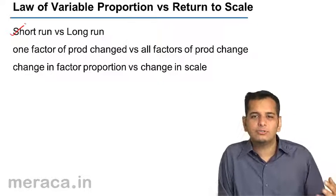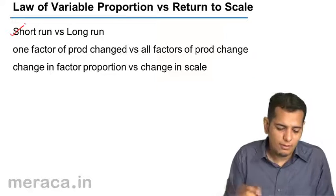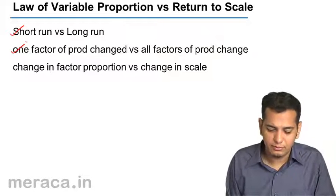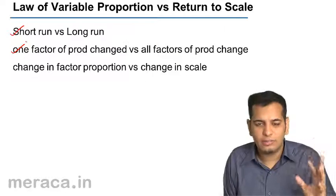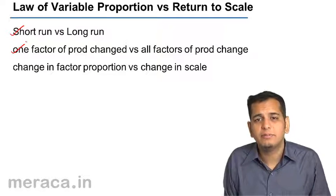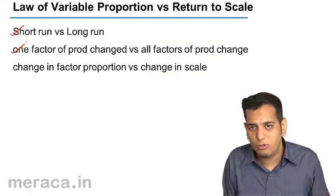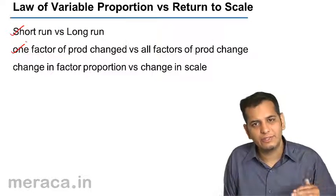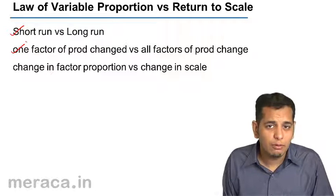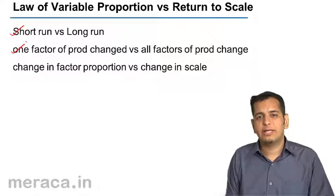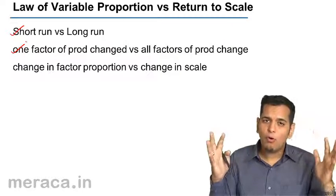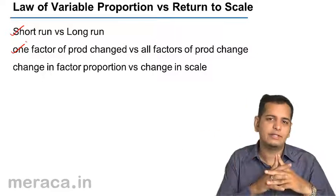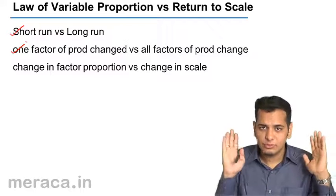But how do we define long run and short run? Short run is where only one factor is variable, however long run is where all the factors are variable. So under the law of variable proportion, we could change only one factor — we could increase or decrease only one factor. However, under the law of returns to scale, we can change all the factors together at the same time; we can increase or decrease them together.